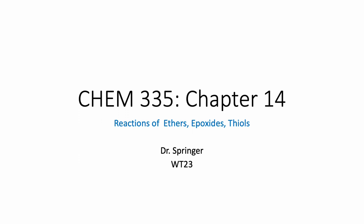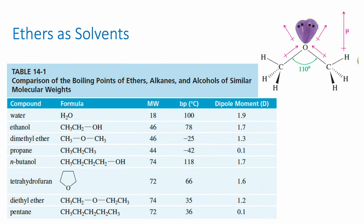This is the start of chapter 14 about ethers, epoxides, and thiols. When we talked about alkanes, we mentioned that they were relatively inert — not particularly reactive — which is why we often use alkanes as solvents. They don't have much of a dipole moment and so they don't react with many species, making them good solvents. A good solvent should not react.